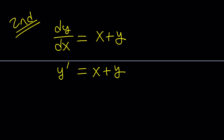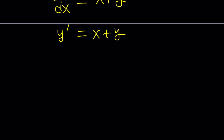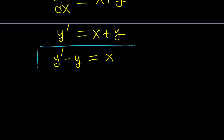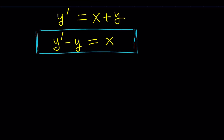Now I want to put this in a nicer form. Putting all the y's on the same side, subtract y, and you get y prime minus y equals x. I do this because I want to take advantage of the homogeneous version of this equation. This is a non-homogeneous equation because we have a function of x on the right-hand side. But if we had 0 instead of x, that would be a homogeneous equation.